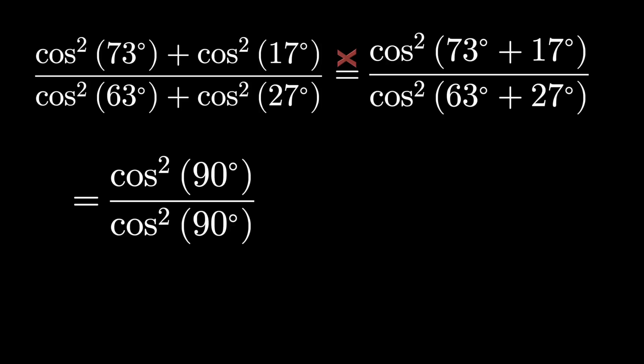And you might as well just cancel the 90 over the 90 while you're at it. Cosine squared of nothing over cosine squared of nothing. Well, anything over itself has to be 1. And it turns out to be the correct answer.